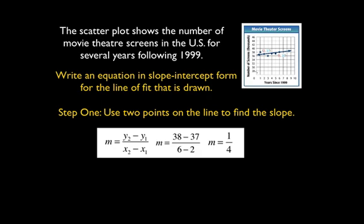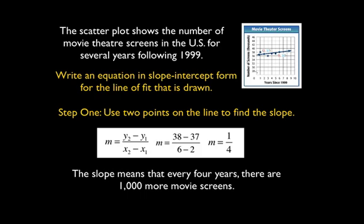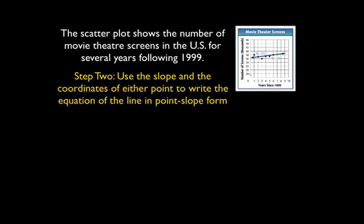From here on out throughout the rest of the problems we're going to change that slope from a fraction to a decimal. So from now on when you see it, it will be 0.25. What does this slope mean? This slope means that every four years there are 1,000 more movie screens.